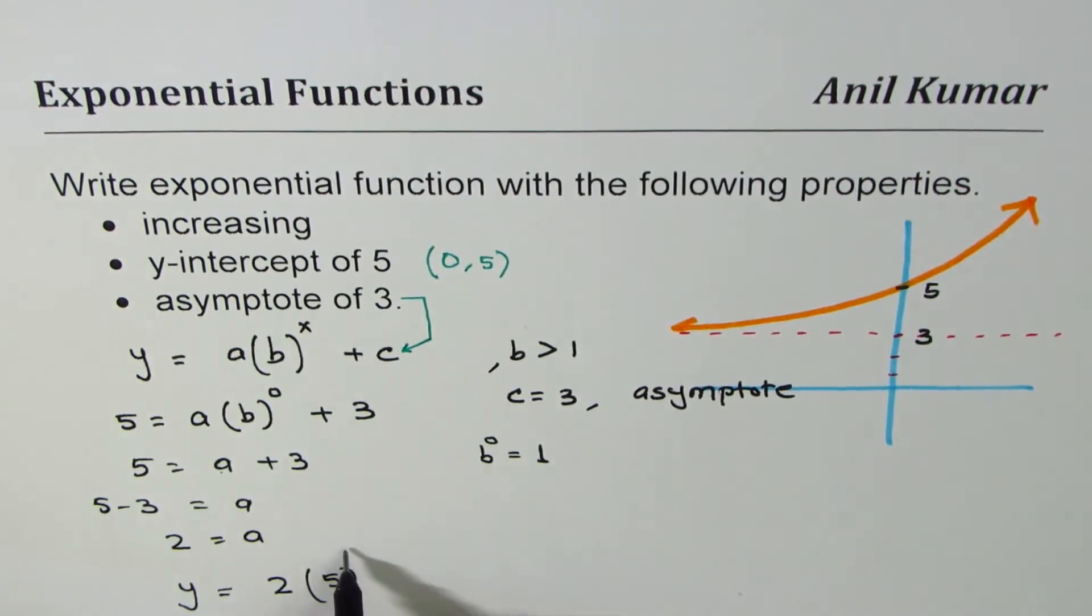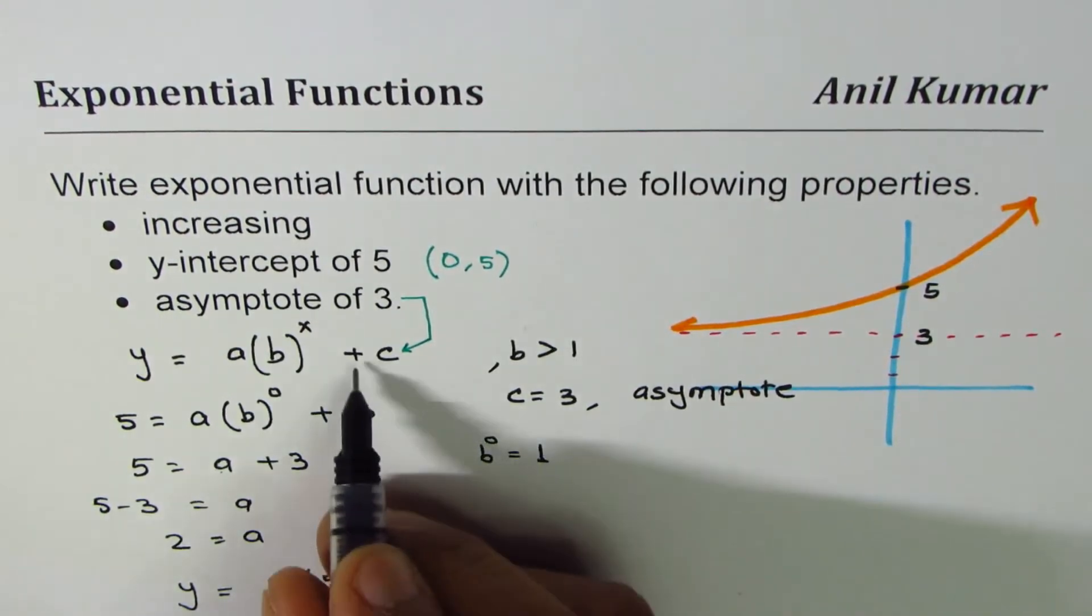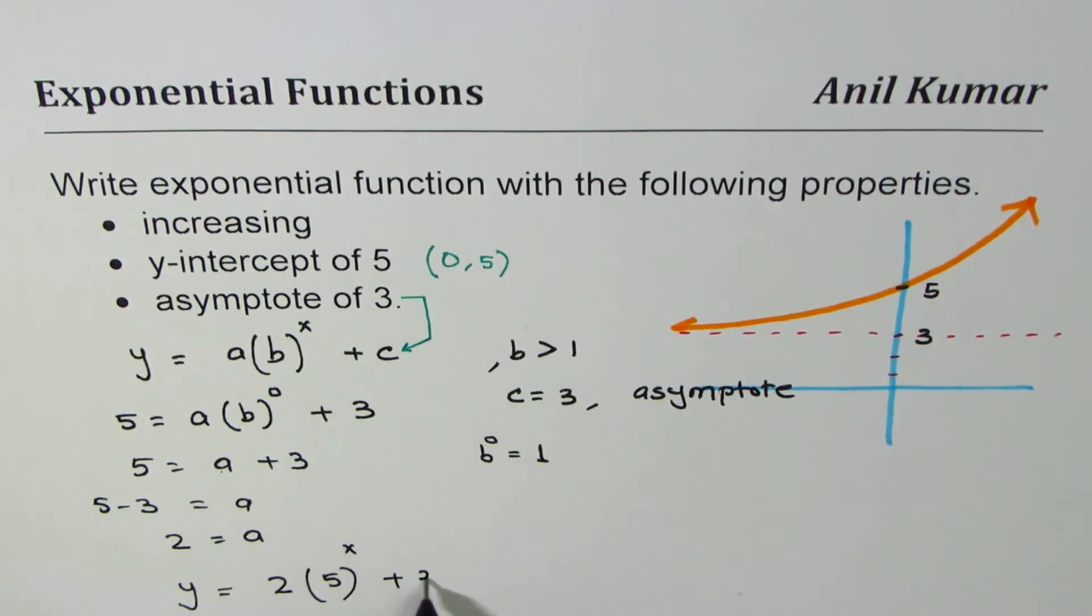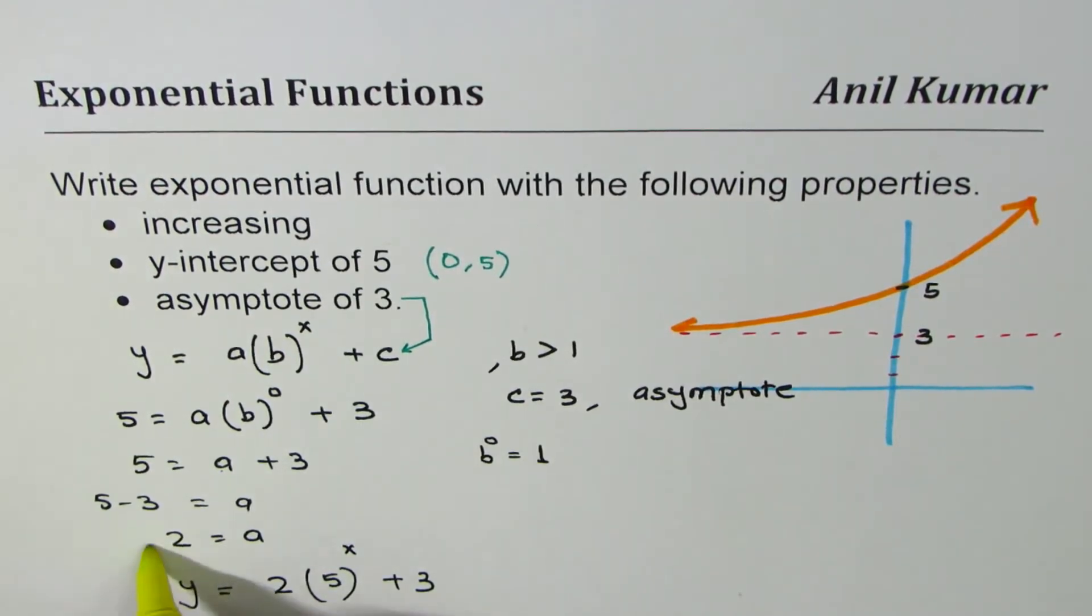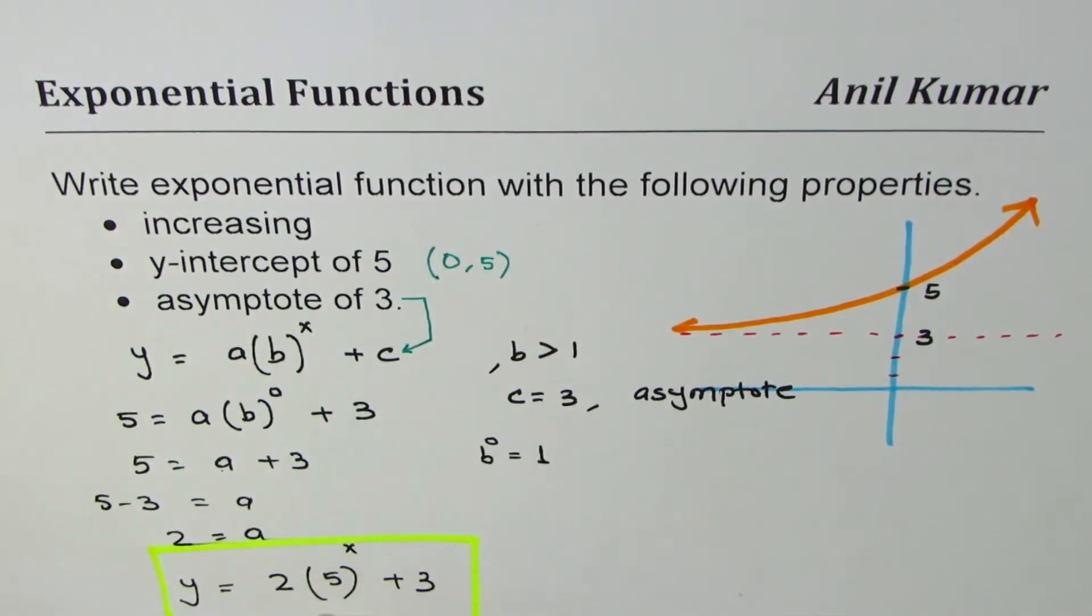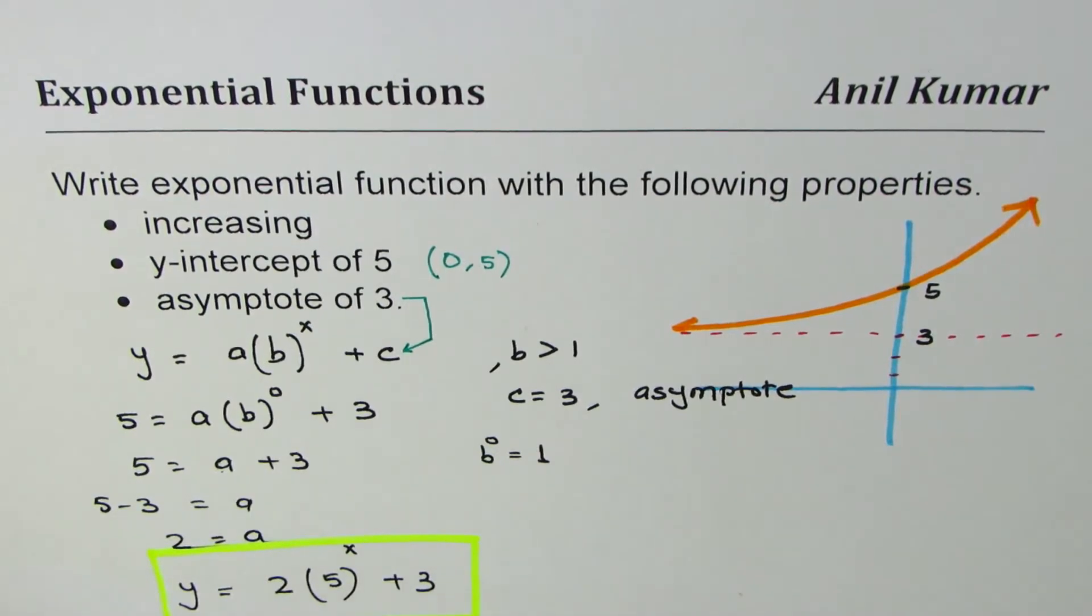b to the power of x plus 3. So that becomes one of the functions which will satisfy all the given properties in this particular case. That is how we could actually get the exponential function.